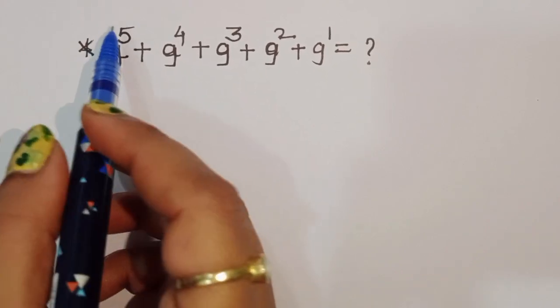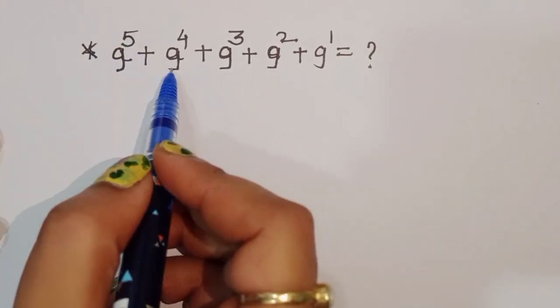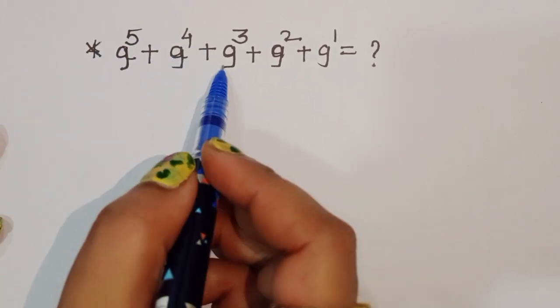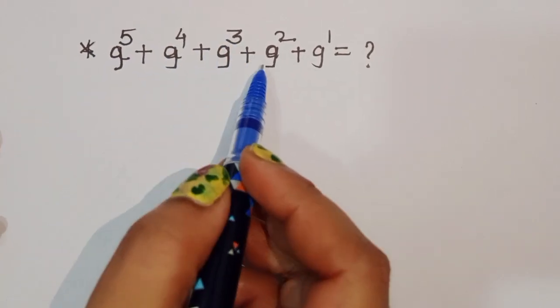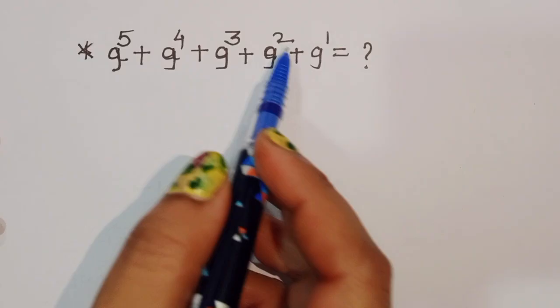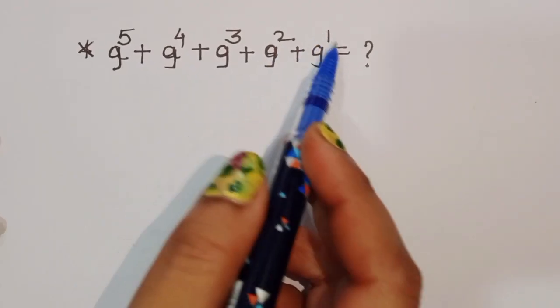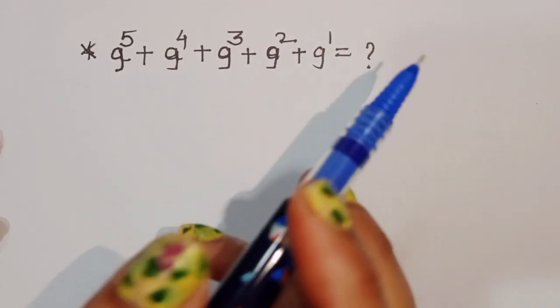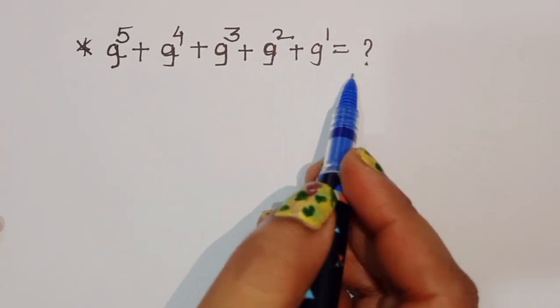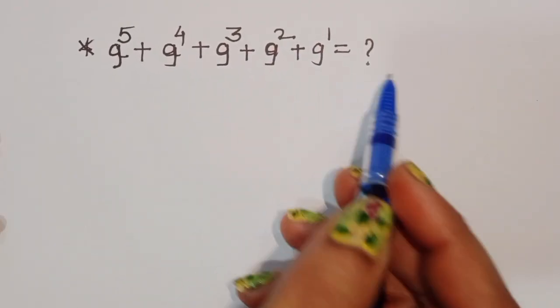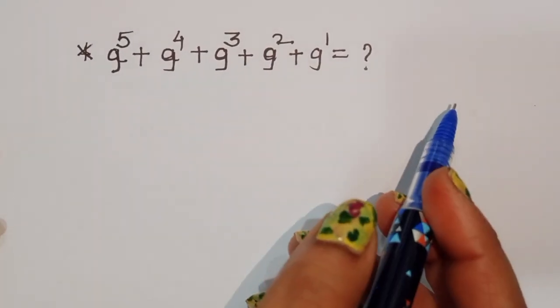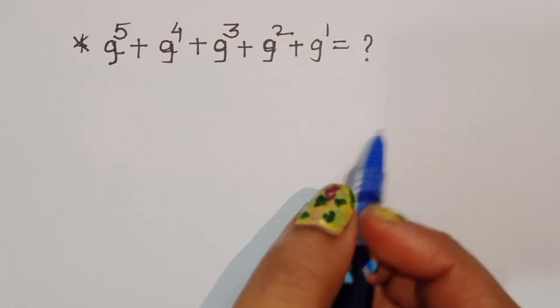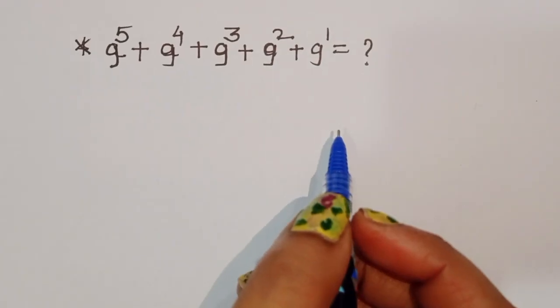The question is: 9 power 5 plus 9 power 4 plus 9 power 3 plus 9 power 2 plus 9 power 1 is equal to what? We have to find out the value of this. Let's see the solution.